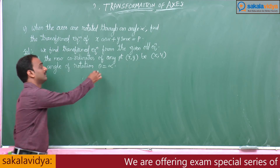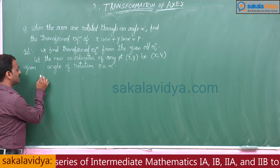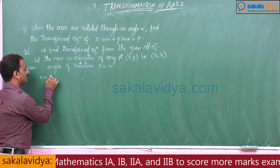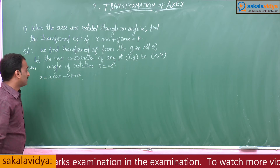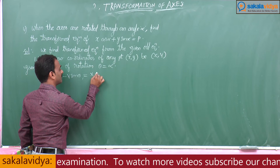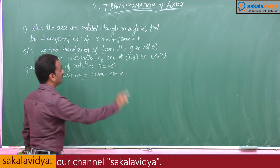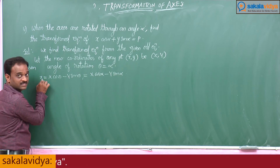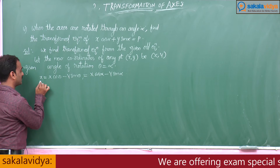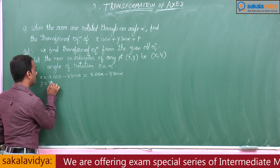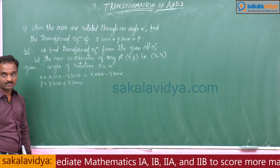Generally we denote theta, but in this case it is clearly given that theta is equals to alpha. Now the relations are: small x is equals to capital X cos theta minus capital Y sin theta, which becomes X cos alpha minus Y sin alpha. And one more relation is small y is equals to Y cos theta plus X sin theta, which becomes Y cos alpha plus X sin alpha.